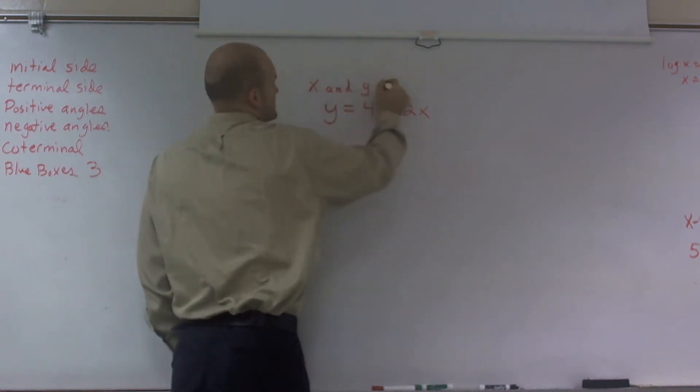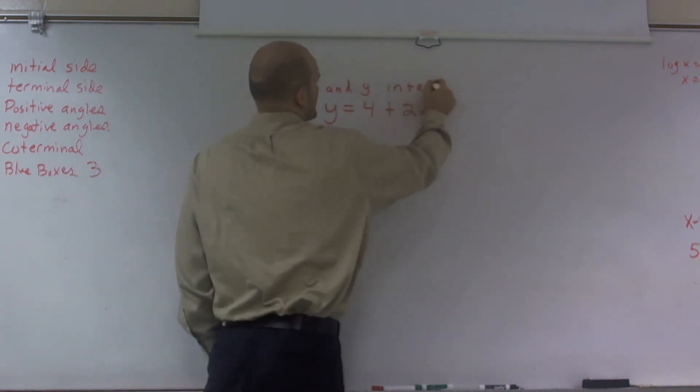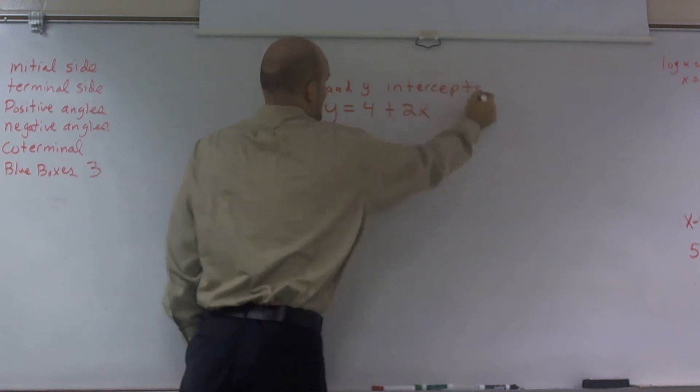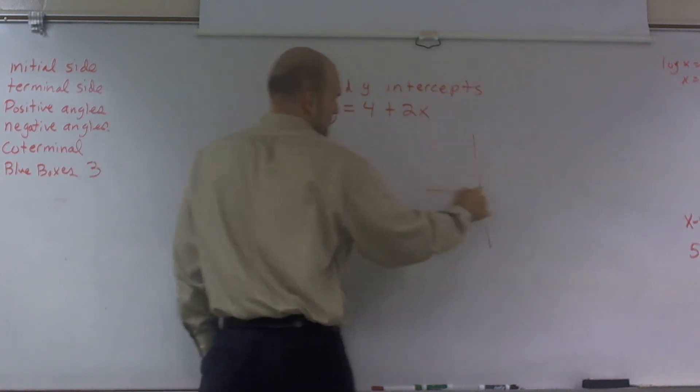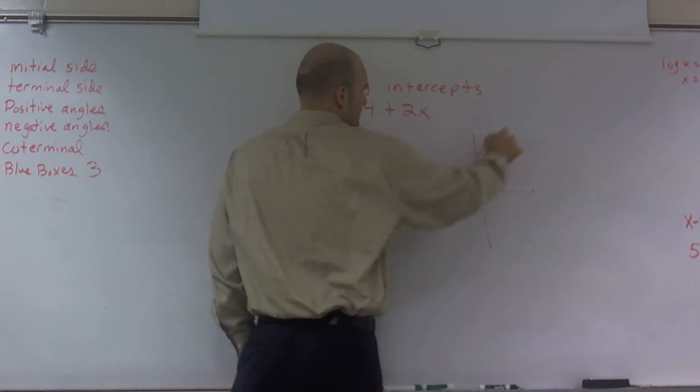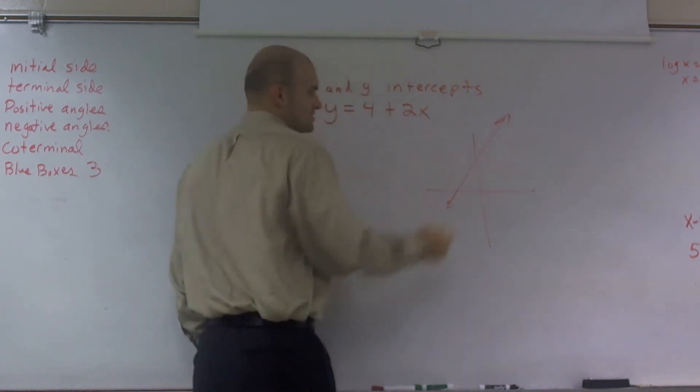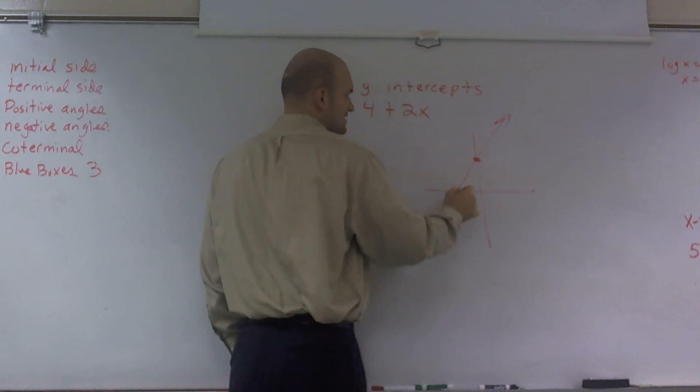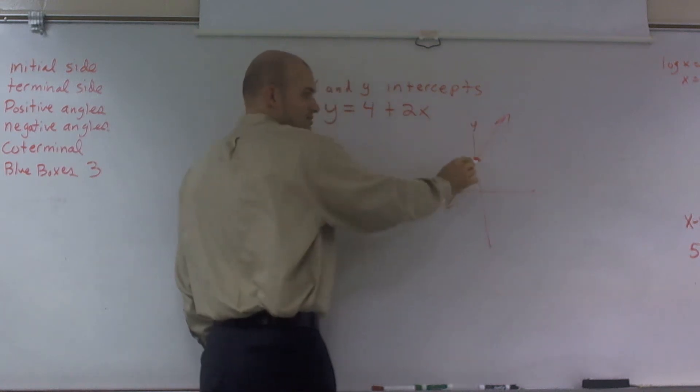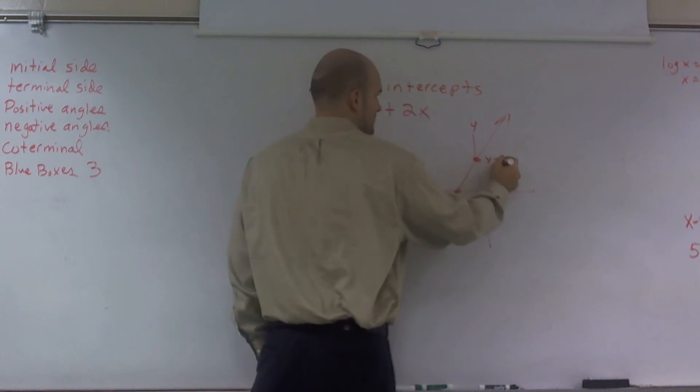Alright, so what we need to do is, you guys remember x and y-intercepts. If you guys remember, the x and y-intercepts are where the graph crosses. Your y-axis is the y-intercept, and where it crosses the x-axis is the x-intercept.